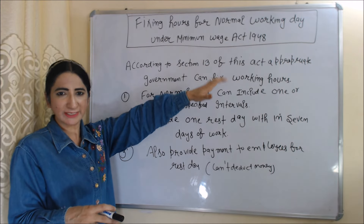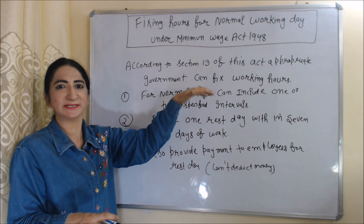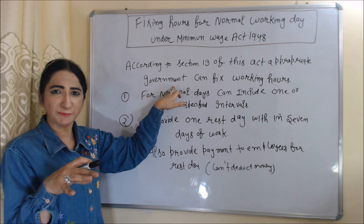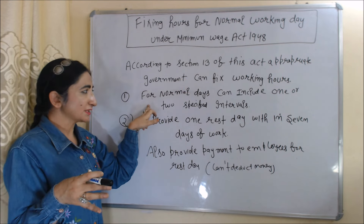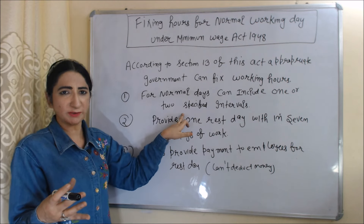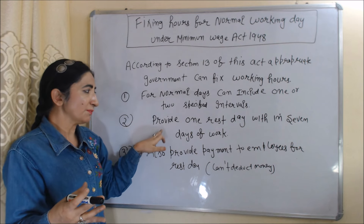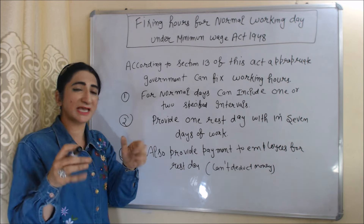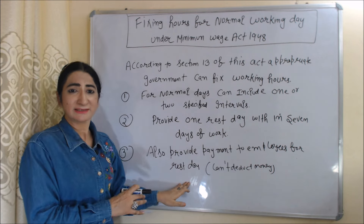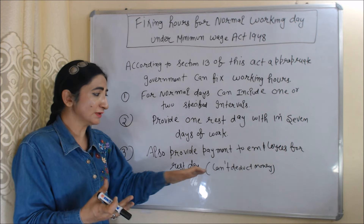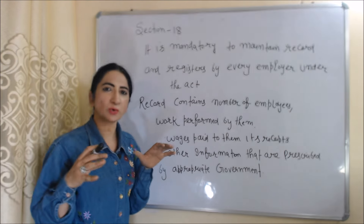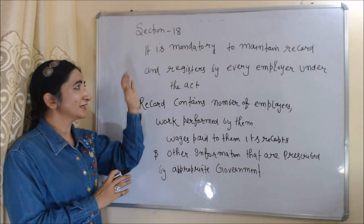Now we will see fixing hours for a normal working day under the Minimum Wages Act 1948. According to Section 13, the appropriate government can fix working hours for normal working days and can include one or two specified intervals. Employers also have to provide one rest day within every seven days of work and must provide payment to employees for that rest day — meaning wages cannot be deducted for the rest day.